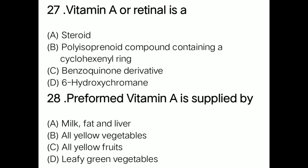Question: Vitamin A (retinol) is option A a steroid, option B a polyisoprenoid compound containing a cyclohexenyl ring, option C a benzoquinone derivative, option D a 6-hydroxychromane derivative. Correct answer is option B: vitamin A or retinol is a polyisoprenoid compound containing a cyclohexenyl ring.